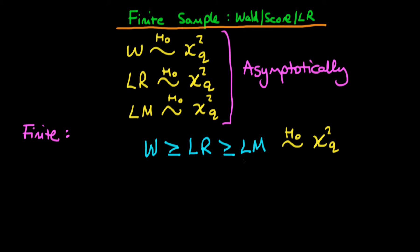If we reject the null hypothesis on the basis of using the LM statistic, then because the LR statistic is always greater than or equal to the LM statistic, we will also always reject the null hypothesis under the LR statistic. And similarly, because the Wald is always greater than or equal to the likelihood ratio statistic, we will always reject the null hypothesis under the Wald statistic if we reject it under the LR statistic, and hence if we reject it under the LM statistic.